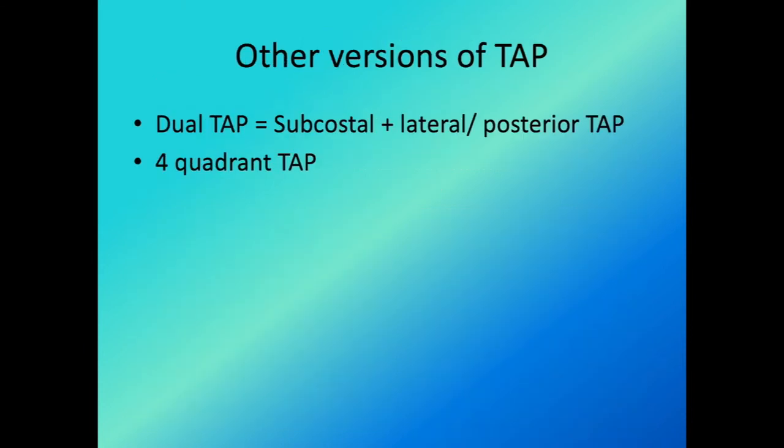Other versions of the TAP block include a dual TAP block — a subcostal plus a lateral or posterior TAP — or a four-quadrant TAP block covering all four quadrants, mainly for midline laparotomies.